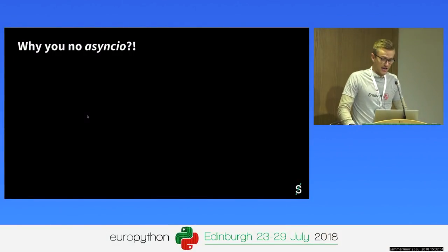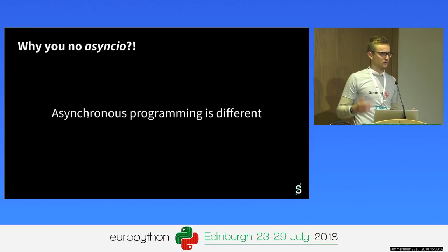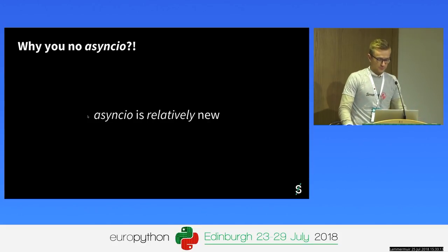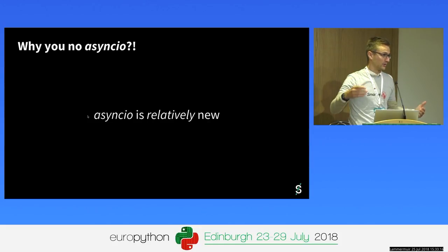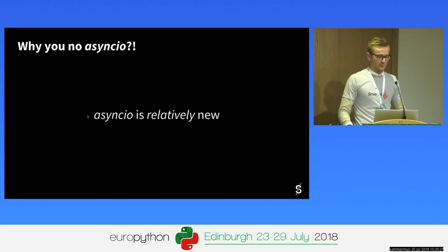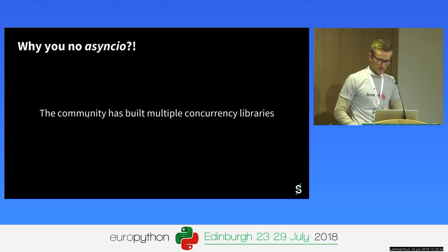So why aren't more people using async.io in production when it's so obviously all rainbows and unicorns? There are definitely a number of reasons. First, asynchronous programming requires a very different mental model and takes some time to adjust to. Second, the async.io feature in Python is relatively new — I mean async.io proper, not Tornado, which dates back to 2009. Third, converting an existing Python application to async.io is non-trivial; it takes effort.